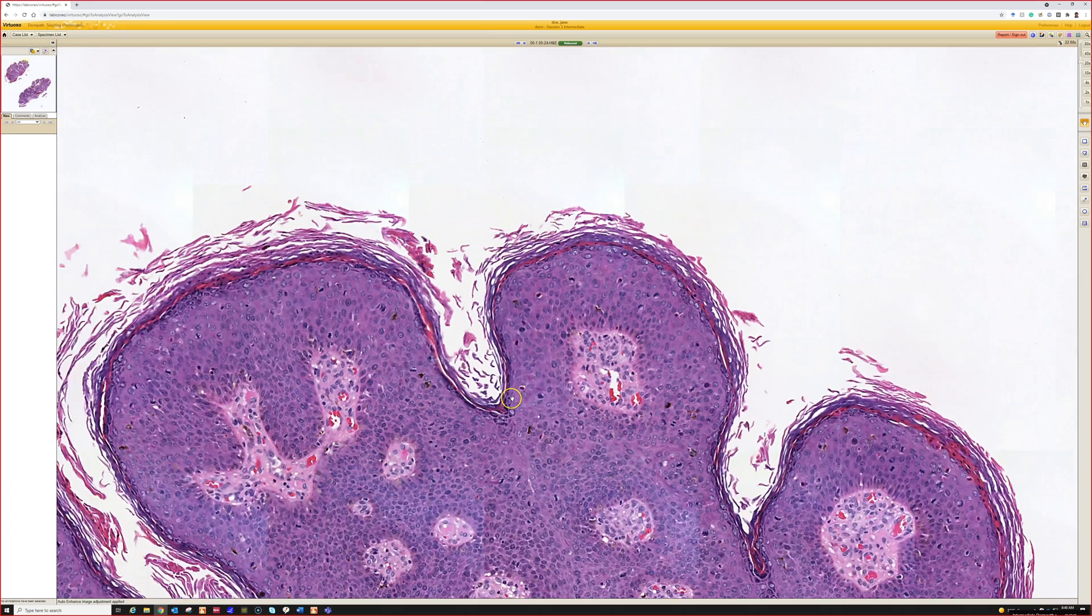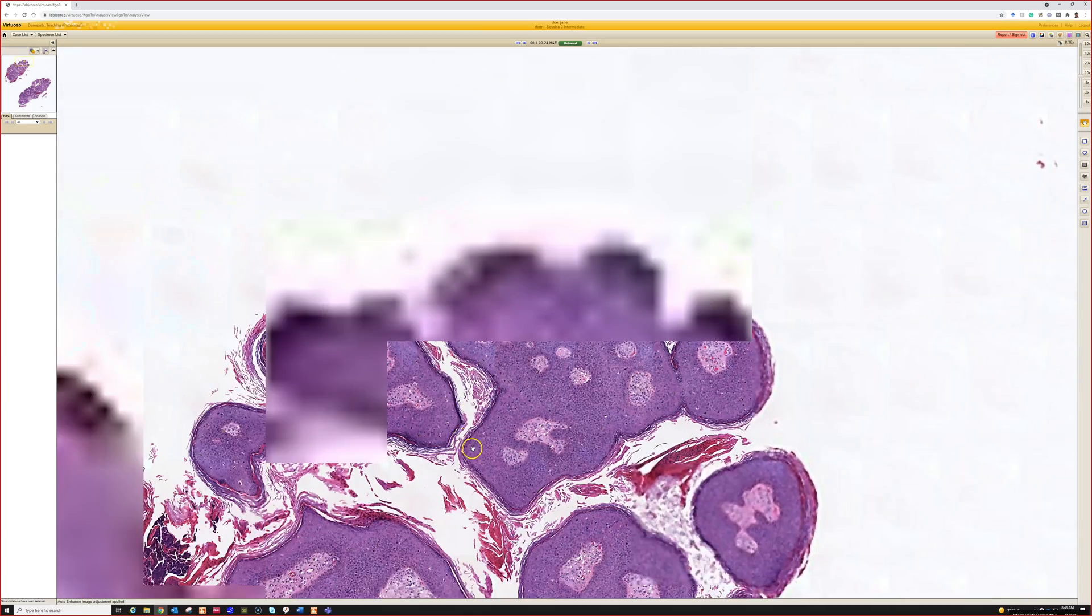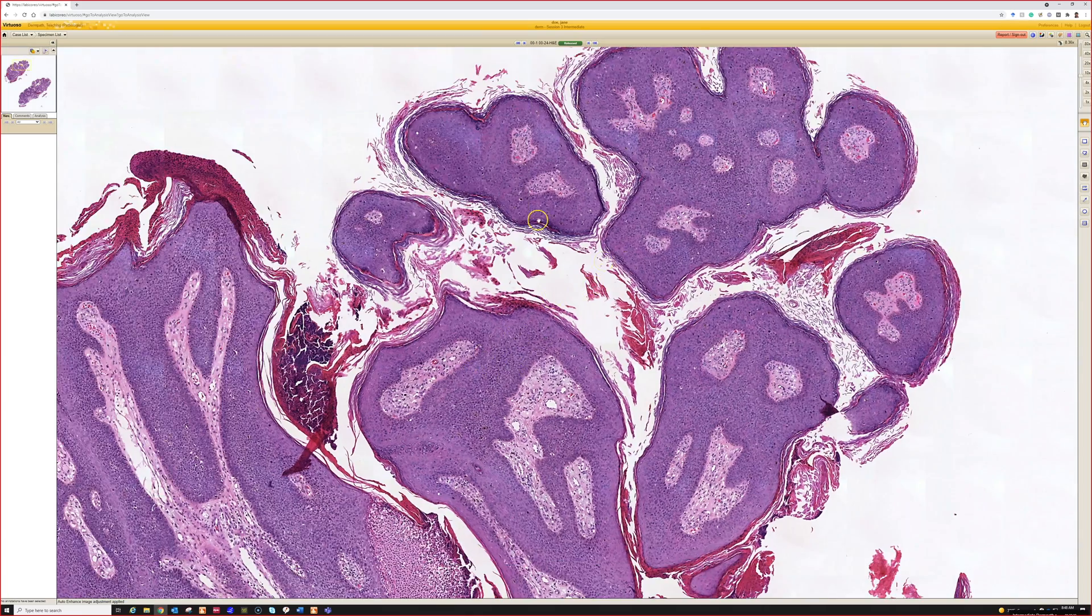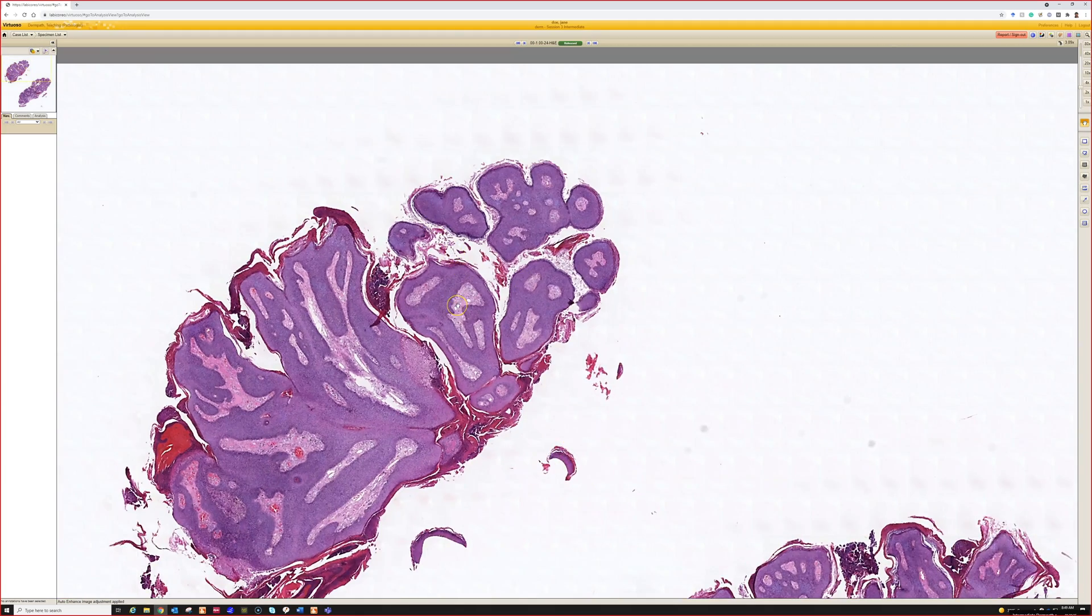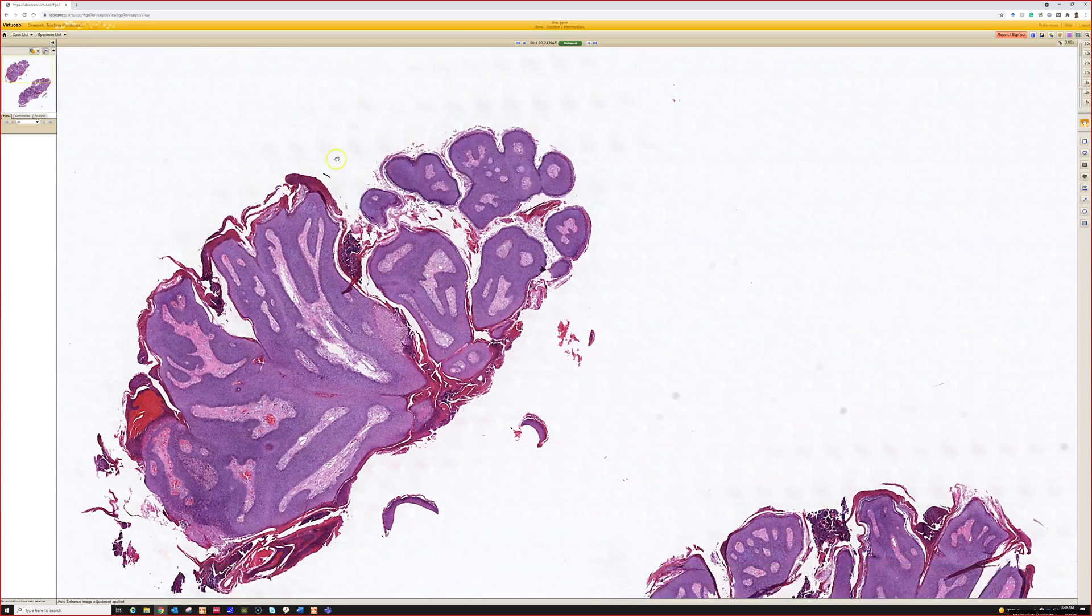In any case, it's high grade dysplasia driven by high-risk HPV. So if I saw this I would actually call it condyloma, probably because of its polypoid shape. I'd say this is condyloma with H-SIL, high grade squamous intraepithelial lesion.